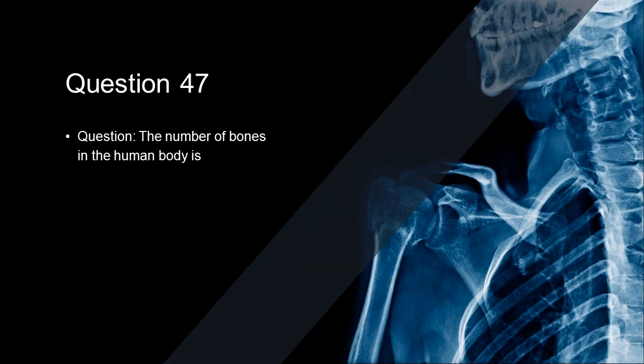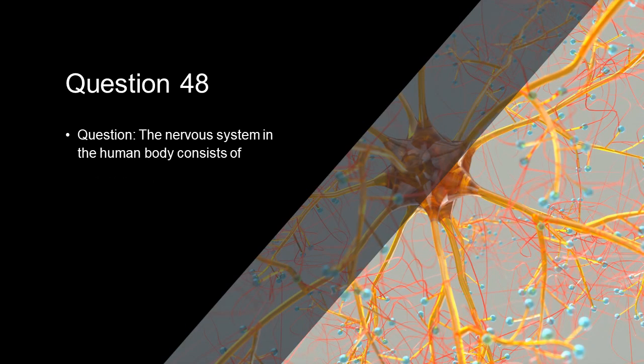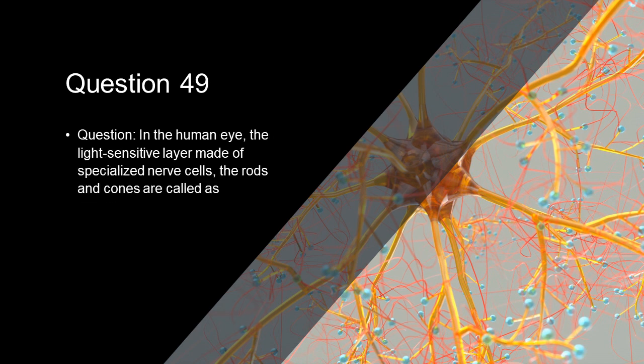The number of bones in the human body is 206. The nervous system in the human body consists of brain, spinal cord and nerves. In the human eye, the light sensitive layer made of specialized nerve cells, the rods and cones are called retina.